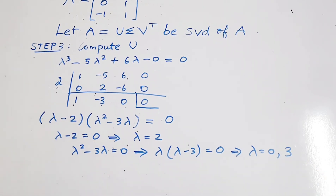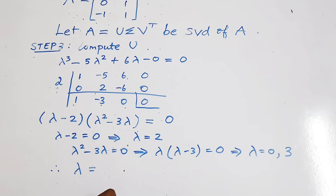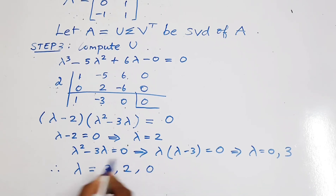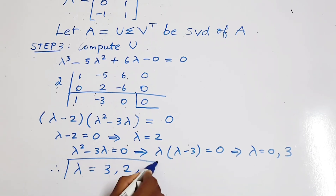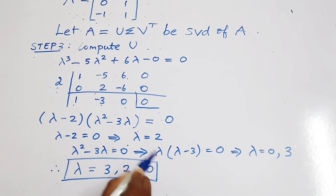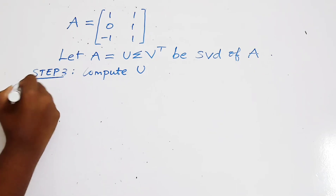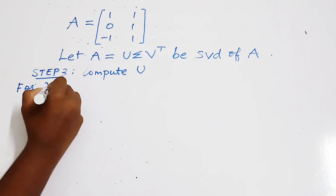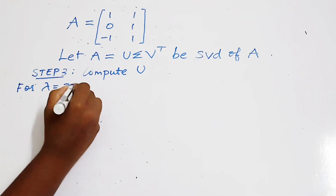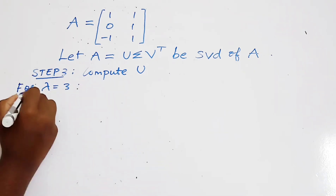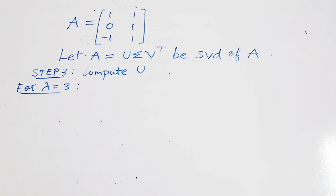The eigenvalues obtained are 0, 2, and 3. In SVD we have to write those eigenvalues in decreasing order. Next we have to find the eigenvectors for the corresponding eigenvalues.